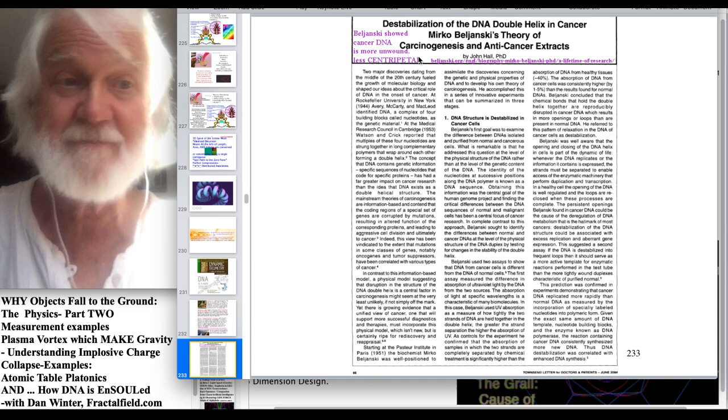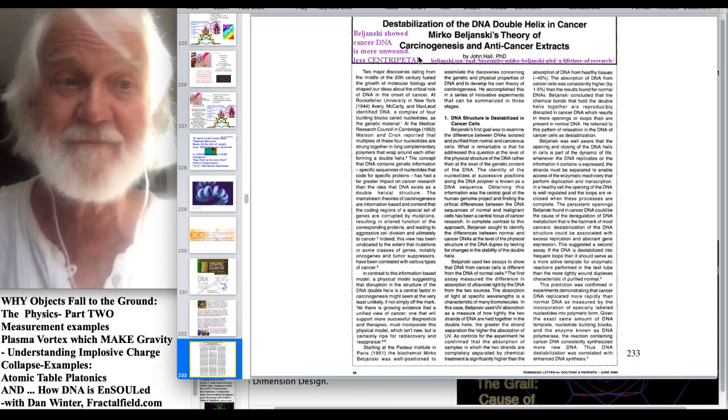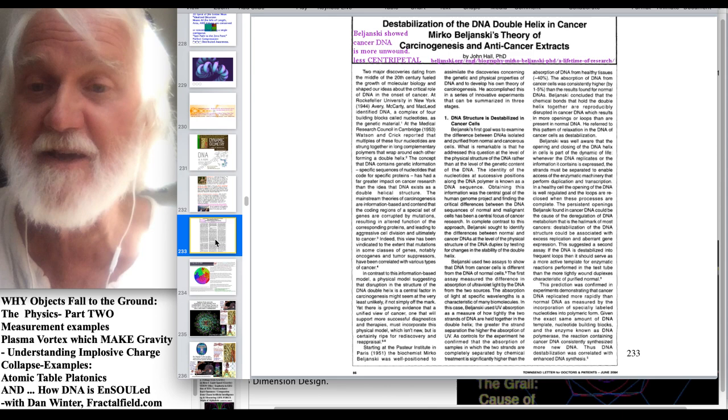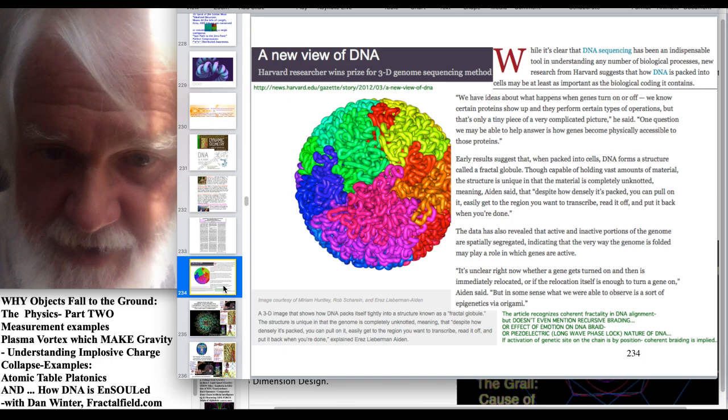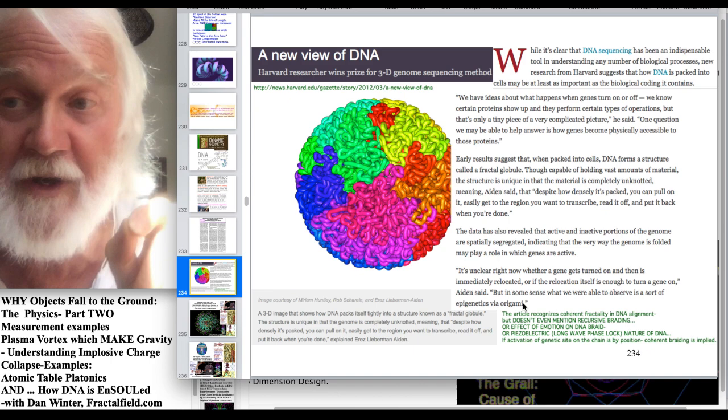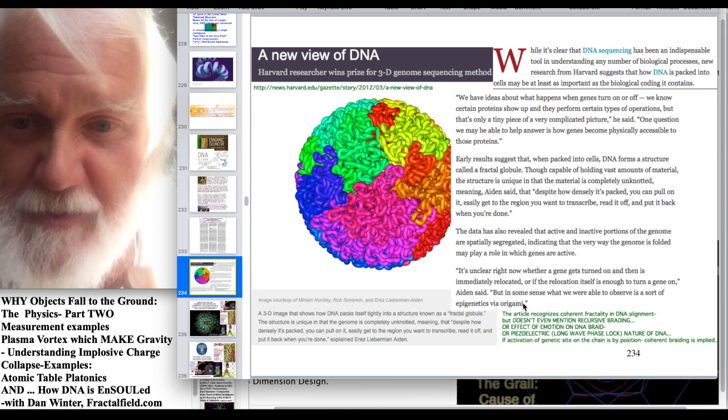Beljansky, measured, that's called cancer. Hello? So the braiding algorithm is the difference between life and death. And this is the genome sequencing. It shows that DNA packs itself lightly into a structure. Coherent fractality and DNA alignment doesn't even mention recursive braiding. But the point is that you could pull one thread out and it would never tangle. That was the genius here. That this was perfect packing with absolutely no possibility of entanglement.